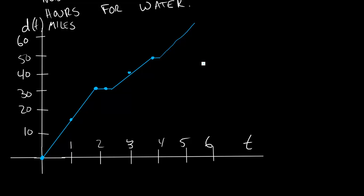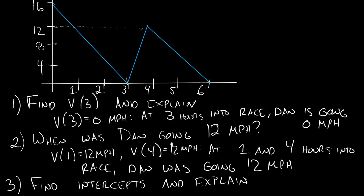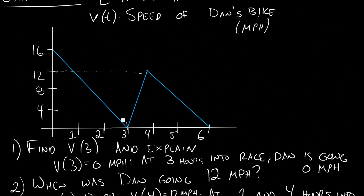Take a moment to think about the differences between this distance graph and the speed graph. We'll get into that more later in the course. Whenever you get confused, think about the input-output pairs: at one hour, where should I be? At two hours, where should I be? With velocity, the question isn't where you are, but how fast you're going at each hour. Trace it out point by point until you can fill in the whole picture. The moral of the story: functions are input-output pairs — always pay attention to what the actual meaning of the function is.